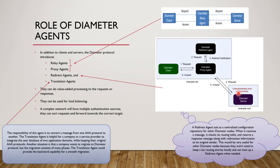An important point of confusion for many students is the types of agents in Diameter. There are four kinds: relay agent, proxy agent, redirect agent, and translation agent. The relay agent is simply a mediator — it takes input from the client and forwards it to the server. It can optionally modify messages depending on configuration. The proxy agent is slightly different — it proxies requests to the server but does not have the server's routing information.